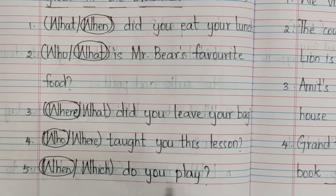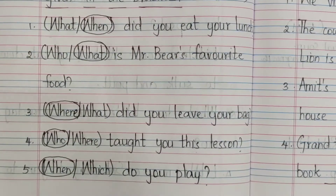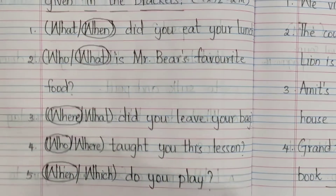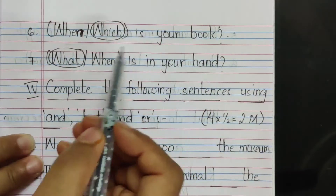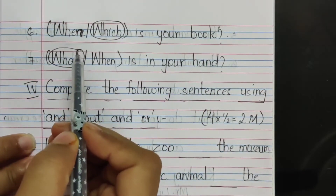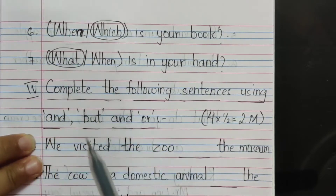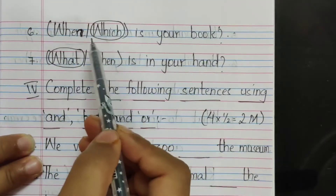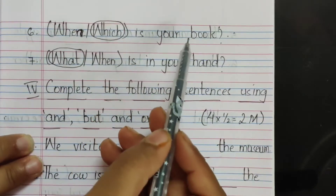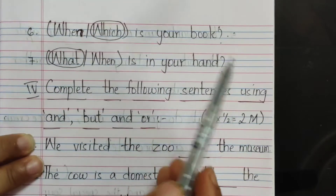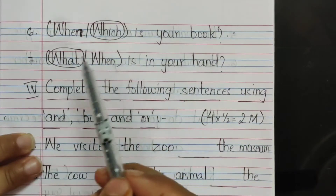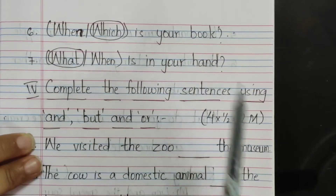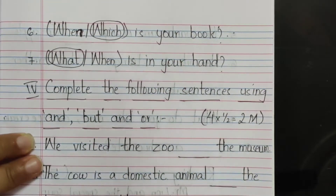'When do you play?' — again, 'when' is used when we are talking about time. 'Which is your book?' — 'which' is used when we are talking about things, like a book is a thing, so we ask 'which is your book?' When we are talking about things we use 'which.' 'What is in your hand?' — 'what' is used to ask about things or actions. So, both 'what' and 'which' are used to ask about things.